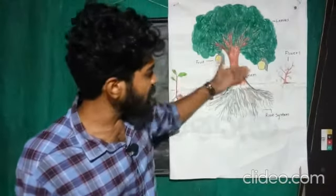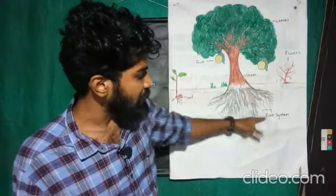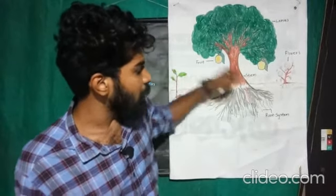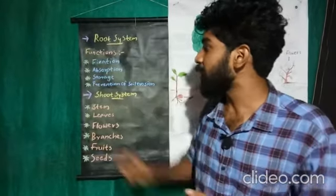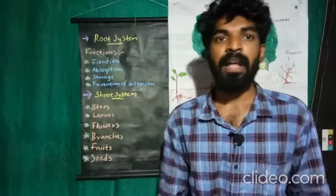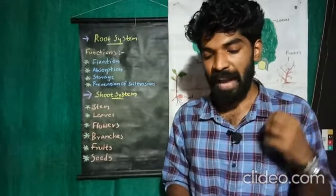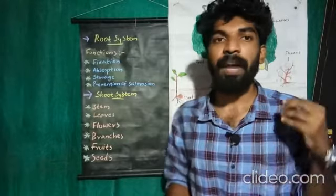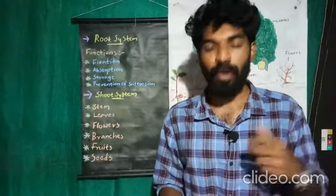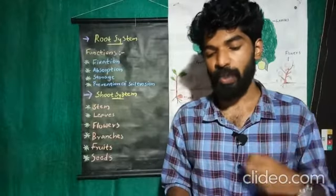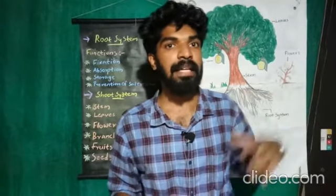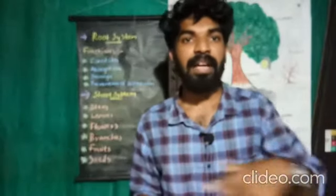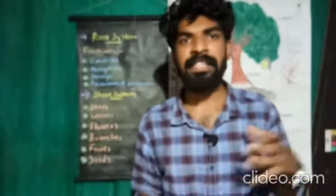We are taking pictures of the root system. The first function is fixation. Roots fix the plant firmly to the soil. Big trees have thick and widespread roots under the soil to support them.